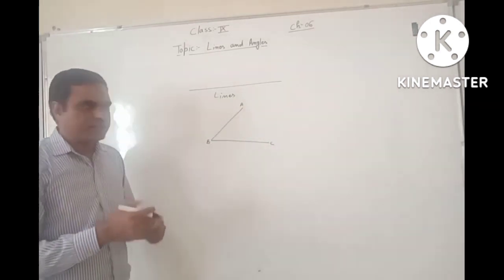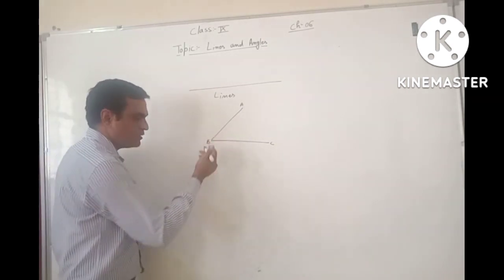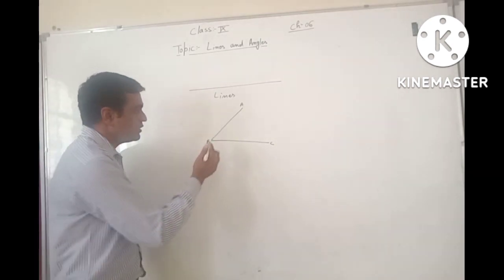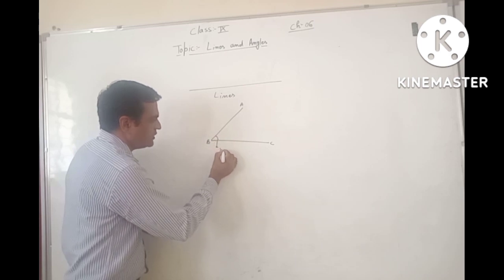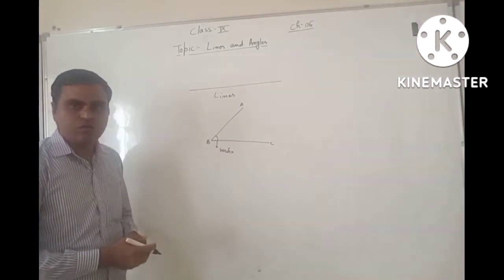I join these two lines and here is the Vertex. Vertex, in other words, we can say that here is the Corner. This is known as Vertex. Or, you can say that this is the Corner.